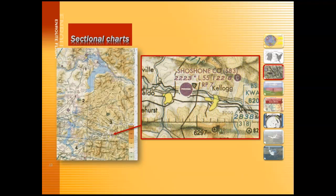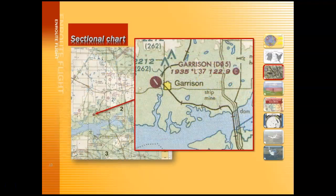Here we have the symbol for Shoshone County Airport. Above the symbol you see the name of the airport and the elevation above sea level — 2,223 feet. This is the symbol for light, so it is a lighted airport. The length of the longest runway at Shoshone County is 5,500 feet. And this is the frequency you'll need to dial into your radio to make announcements on their common traffic advisory frequency. Here's the symbol for the Garrison Airport, and 122.9 is the CTAF frequency. The C in the circle stands for common traffic advisory frequency.